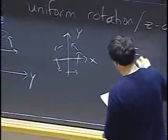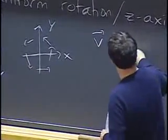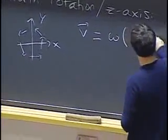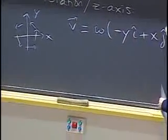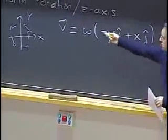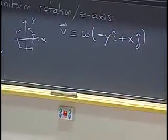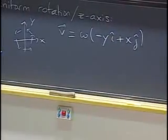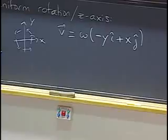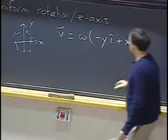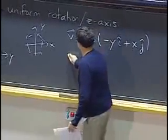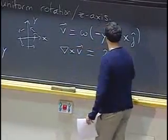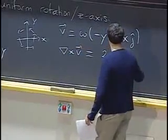For example, if I give you a uniform rotation motion about the z-axis, that's a vector field in which the trajectories are going to be circles centered on the z-axis, and our vector field is just going to be tangent to each of these circles.